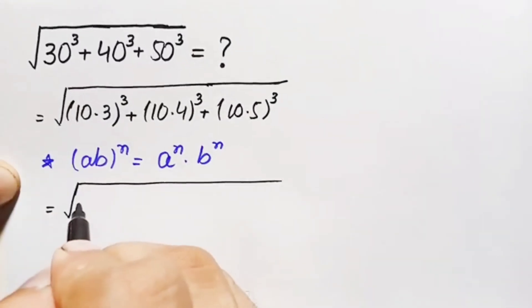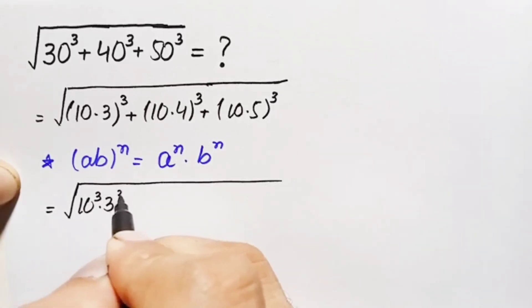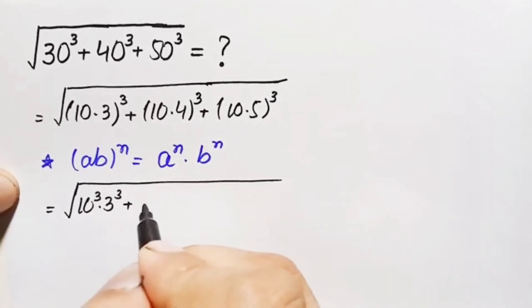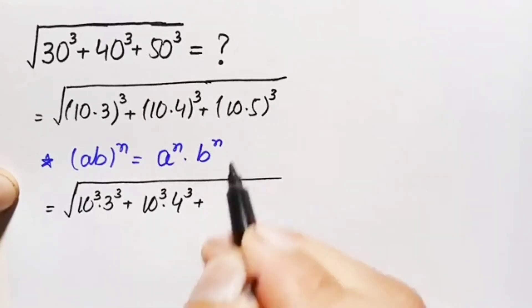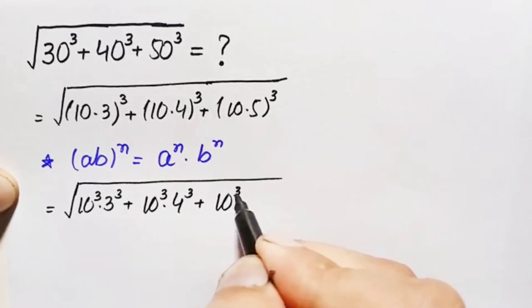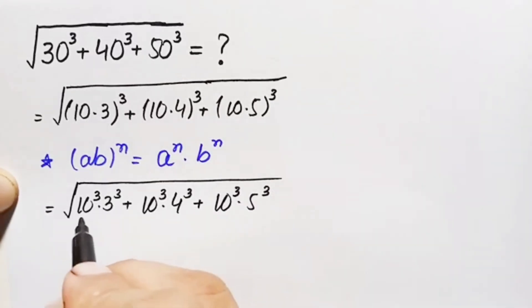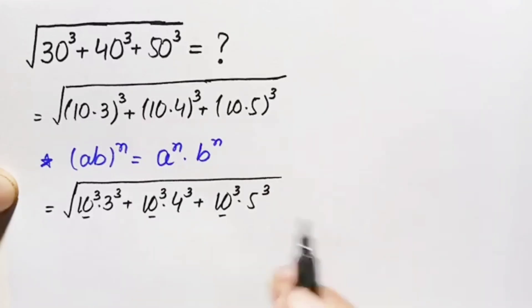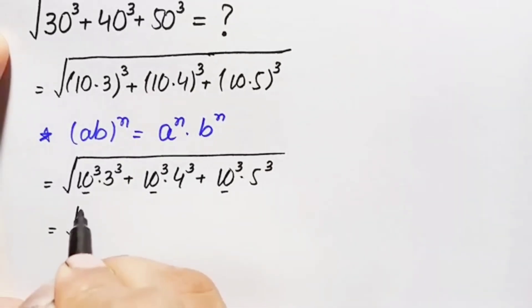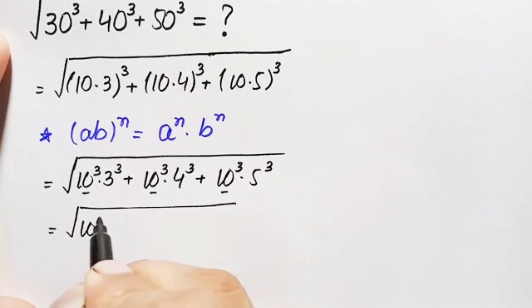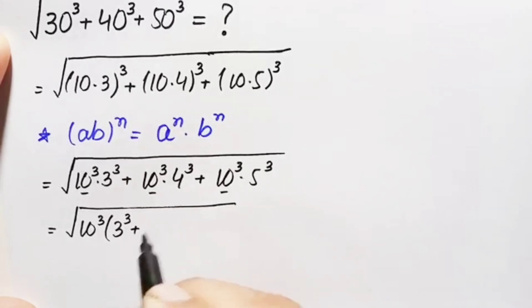This becomes the square root of 10 cubed times 3 cubed, plus 10 cubed times 4 cubed, plus 10 cubed times 5 cubed. Looking at all three numbers, 10 cubed is common, so we take it out. This gives us the square root of 10 cubed times (3 cubed + 4 cubed + 5 cubed).